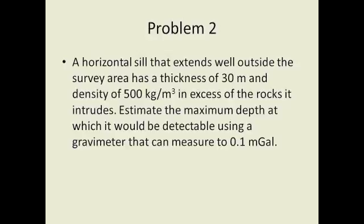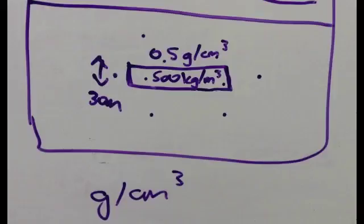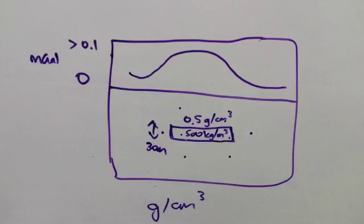So estimate the maximum depth at which it will be detectable using the gravimeter. And so if you think of your software that you've just done, we should maybe do it both ways. You can do it in the software and you can do a calculation. This is our screen. We're putting in a horizontal tabular structure, which is our sill, below the surface. That's zero meters. We know that it's 30 meters thick. And we know that it has a density contrast of 500 kilograms per meter cubed. Your software deals in grams per centimeter cubed, that's why we're dealing with 0.00 something. So this as grams per centimeter cubed would be 0.5 grams per centimeter cubed.